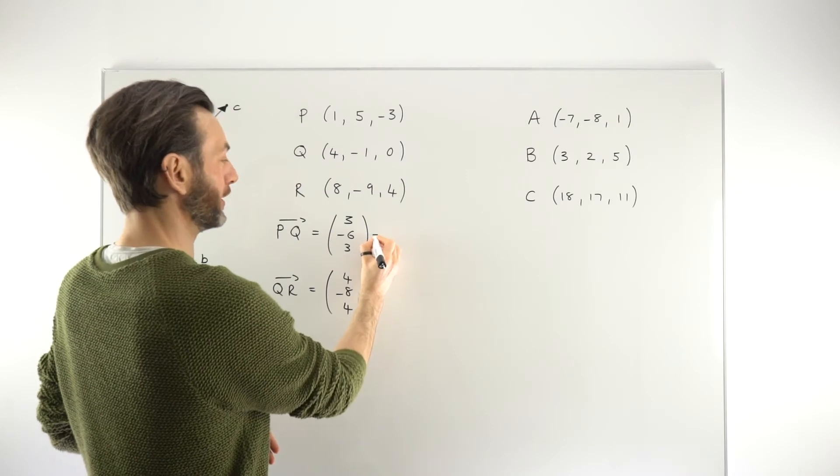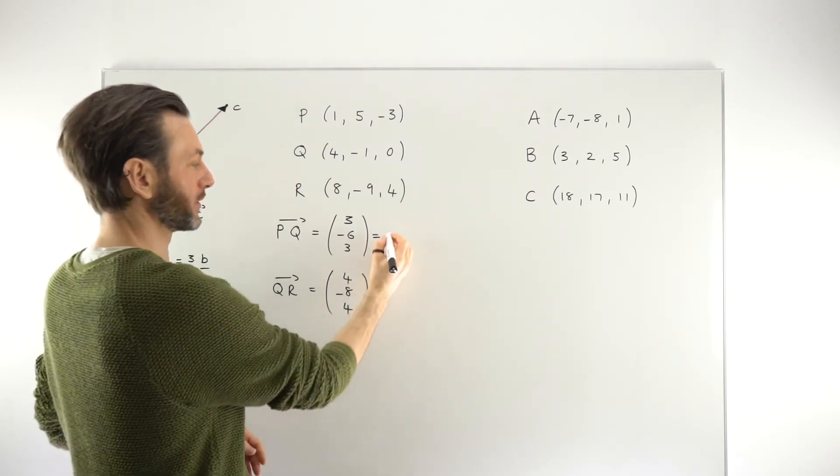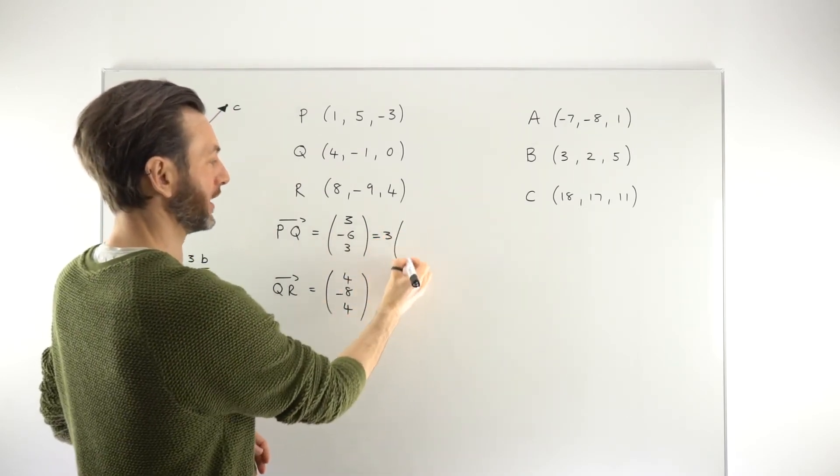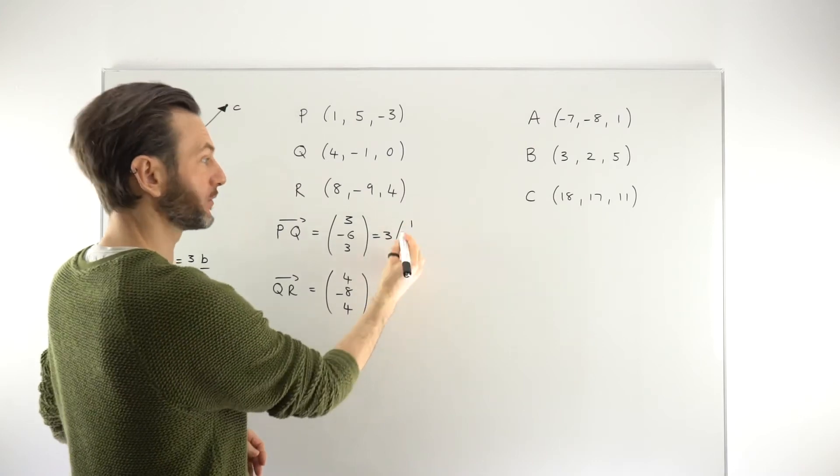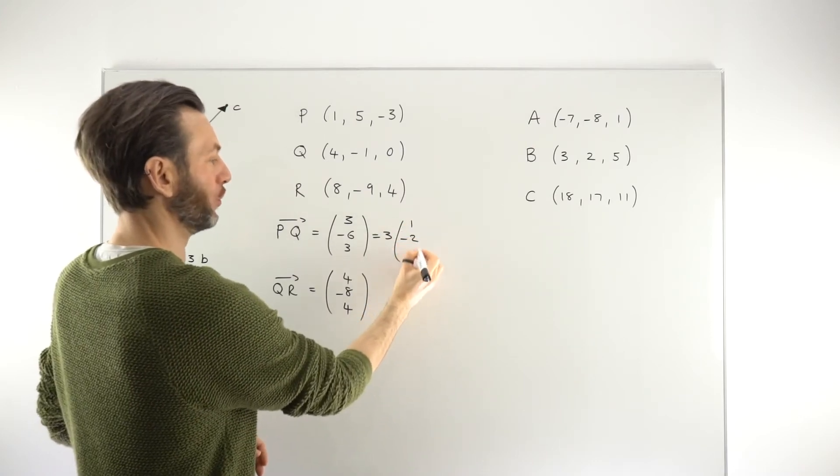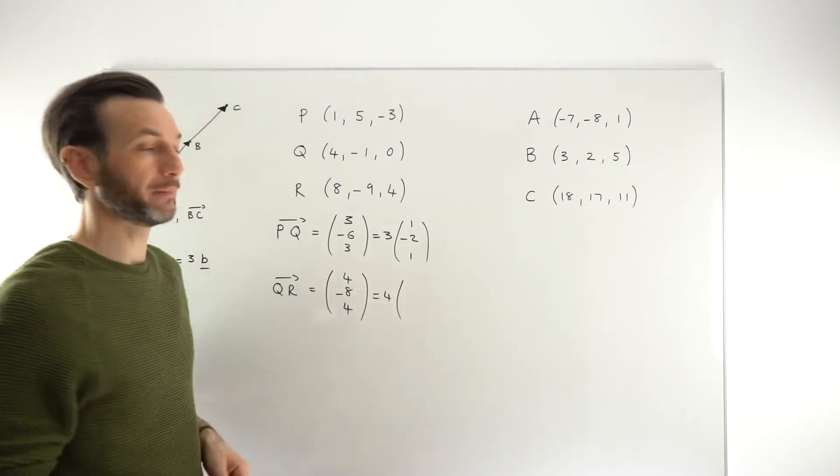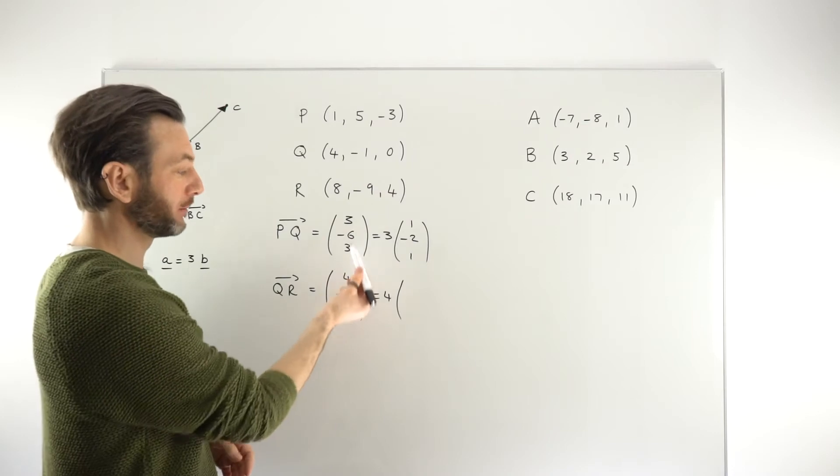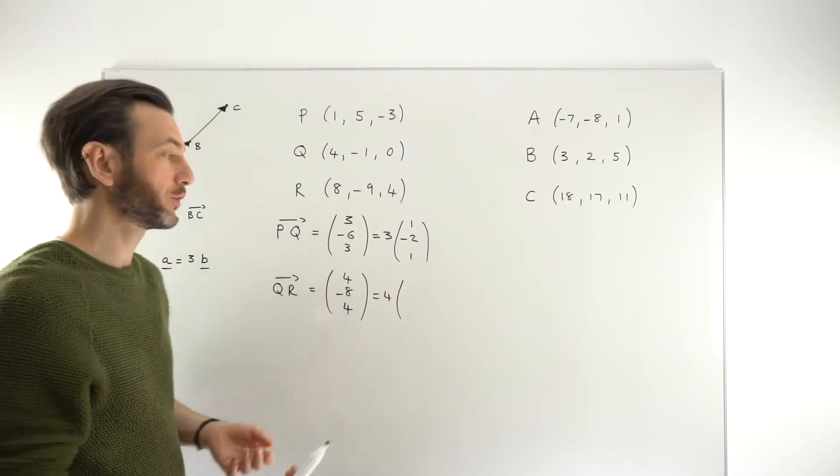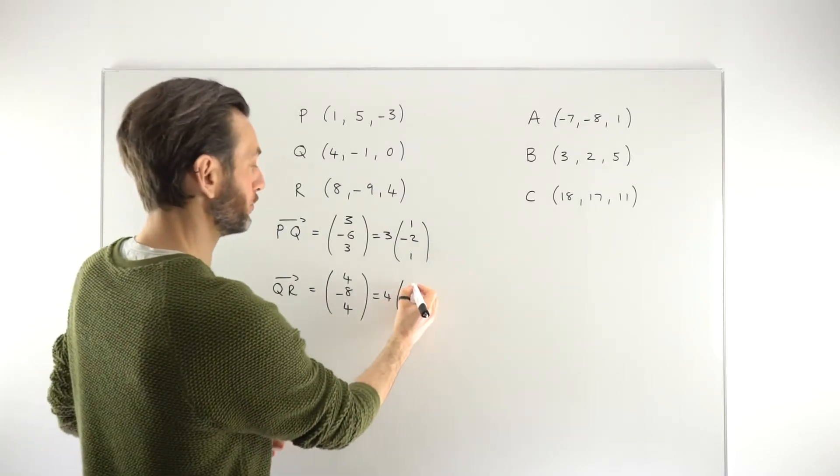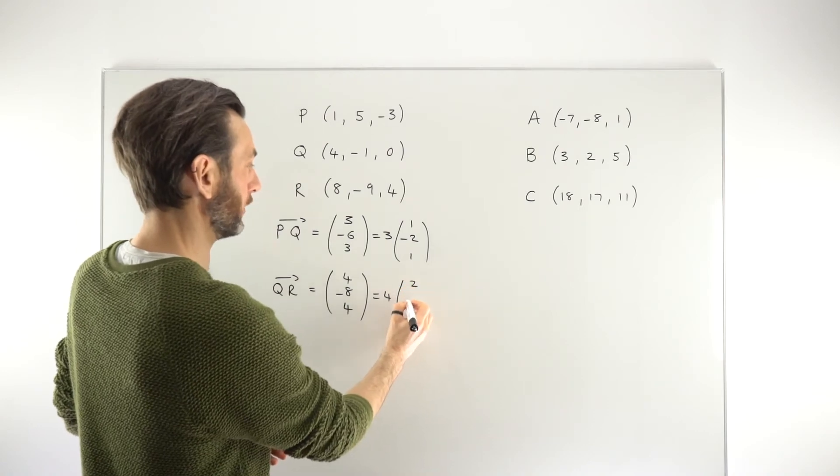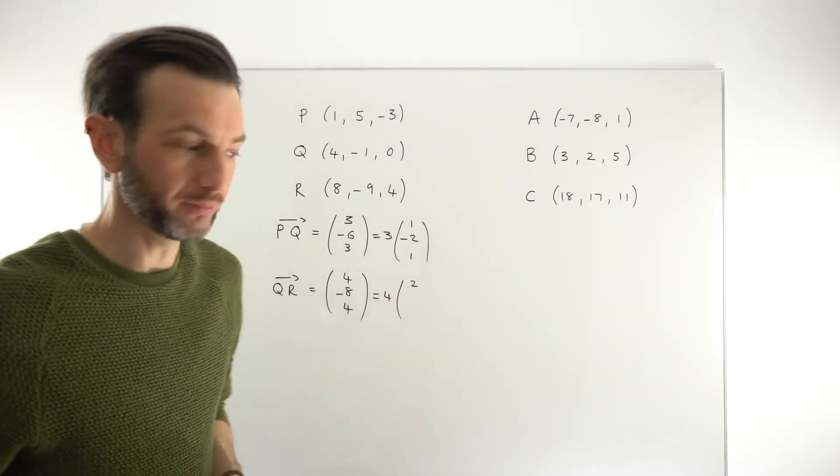So a more formal way to do it is to notice that there is a common factor here, a common factor of 3, which gives you what's called a base factor of 1, minus 2, 1. And here we've got a common factor of 4. Now, this doesn't always happen in these questions, that you get a common factor. Sometimes the numbers are just clearly a multiple of each other. In this case, so we're pulling out the common factor just to make it a little clearer what's happening here.